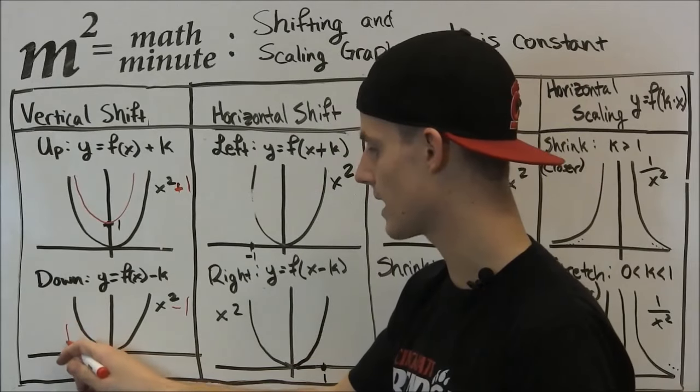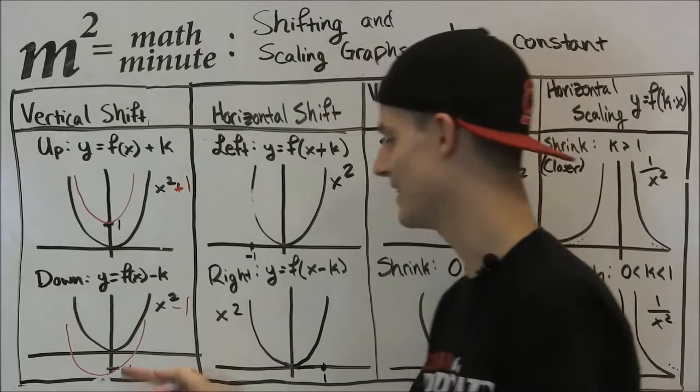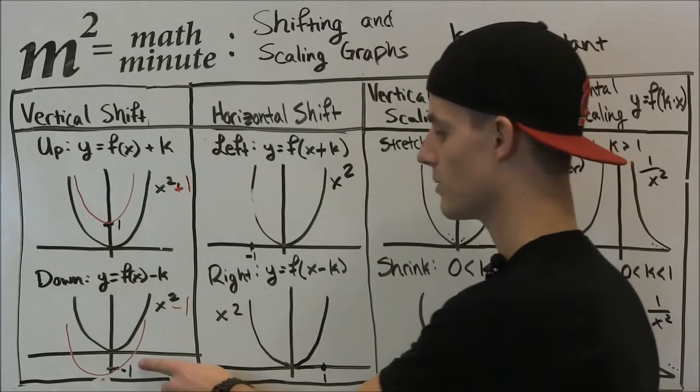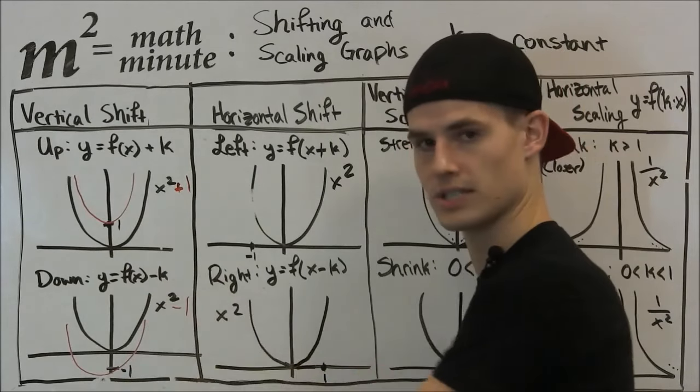So once again, we're going to draw the exact same graph x squared, as good as we can. And we're just going to draw it down one unit. So this would be the graph x squared minus 1. It's the graph of x squared, just down one unit.